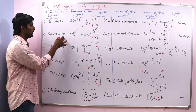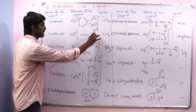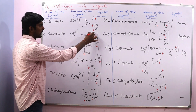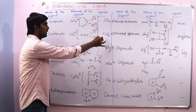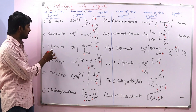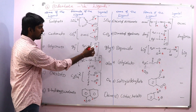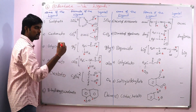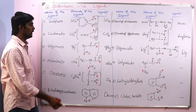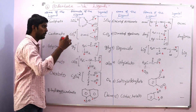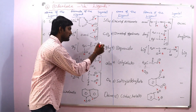Similarly, next is carbonate. CO₃²⁻ is the formula and this is the structure. Here these two oxygen atoms are the donor atoms, and the symbol is CO₃. Next is glycinate. GLY⁻¹ — here oxygen and nitrogen are the donor atoms. These two donate electron pairs to the central metal atom or ion, and the symbol is GLY.